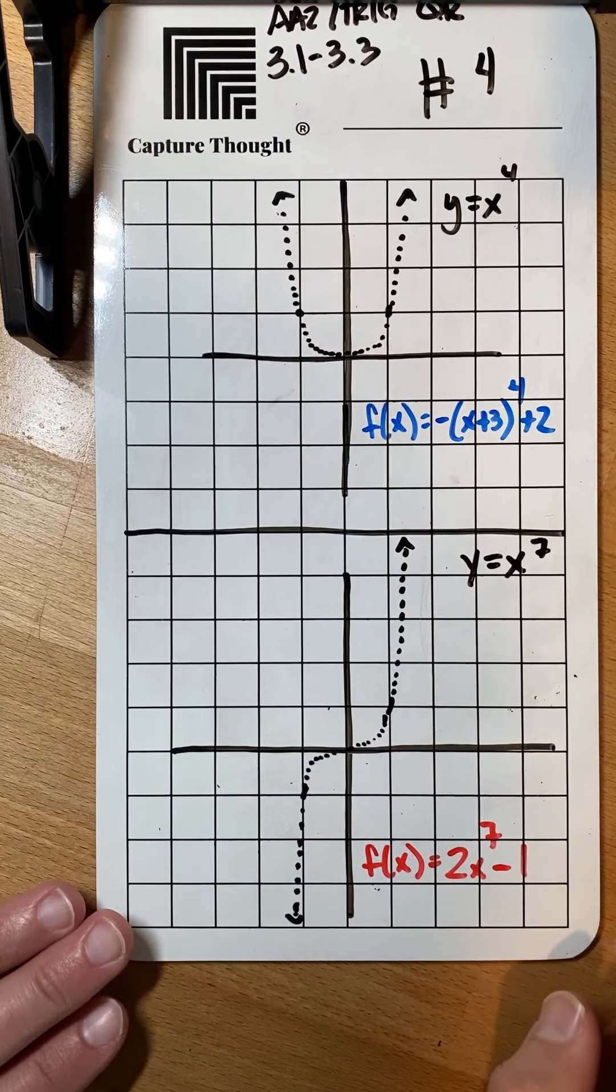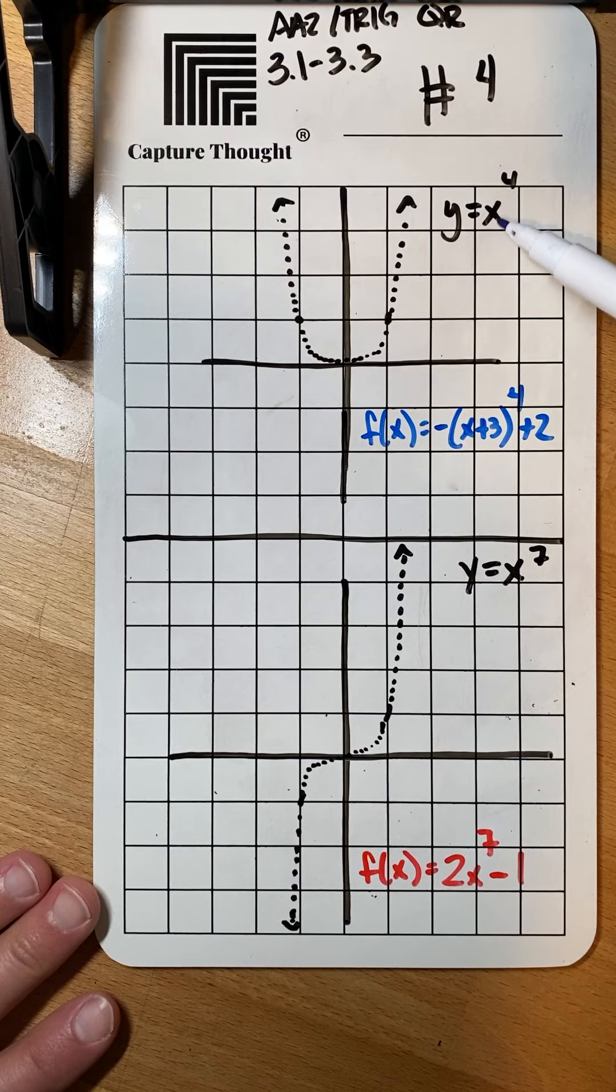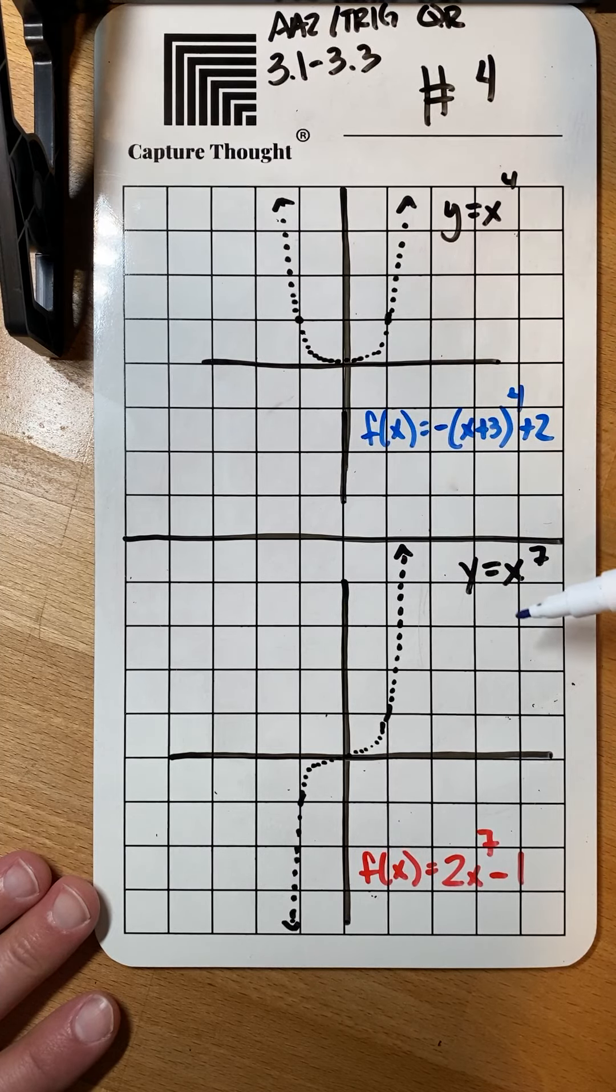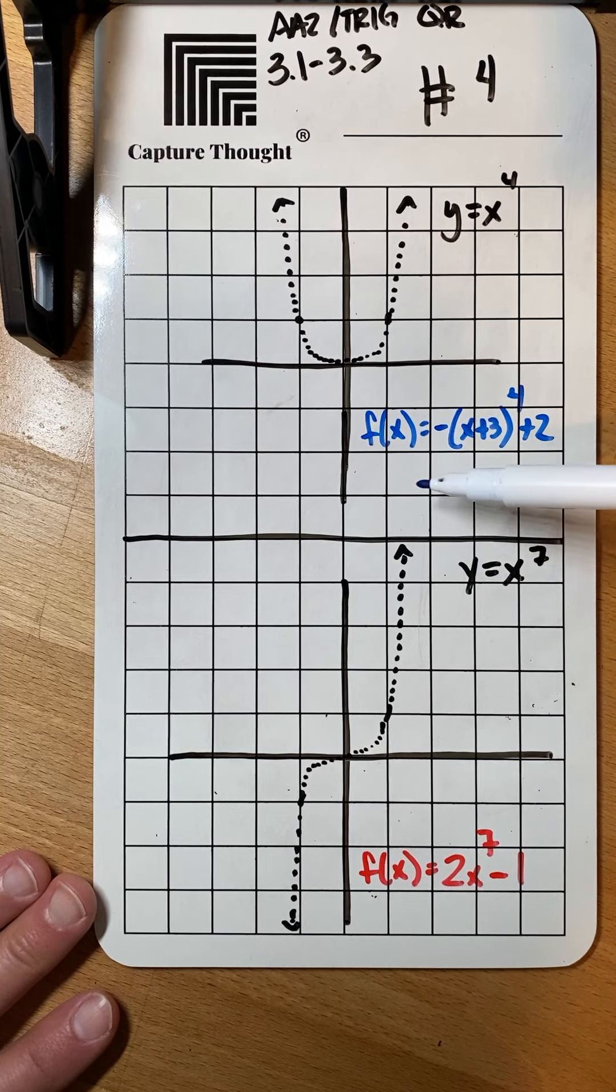Number four on the QR code review is asking us to look at basic polynomials like y equals x to the fourth for part a and y equals x to the seventh for part b and to perform some transformations.